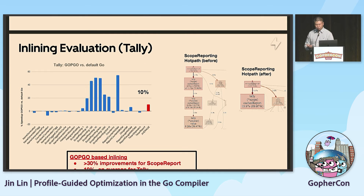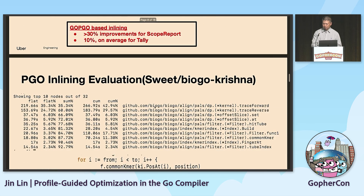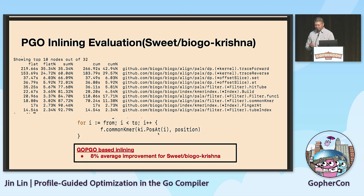Here are some experiment results for profile-guided inlining. In the first benchmark, the hot-path function is very hot, and after inlining it we see about 10% improvement. In another example with a string benchmark, the function common curve is called inside a loop and cannot be inlined due to budget constraints. Based on the profile, the compiler inlines this function and we see about 8% improvement.